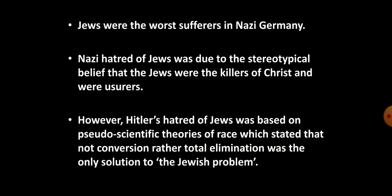Nazi hatred of Jews was based on a stereotypical belief of them being the killers of Christ and usurers who used to lend money at excessive rates of interest. Due to such beliefs, Jews could not own land until medieval times and had to live separately in areas called ghettos. Quite often, they were persecuted through organised violence. But Hitler's hatred of Jews was based on false scientific theories of race, according to which the Jewish problem could be solved only through their total elimination.